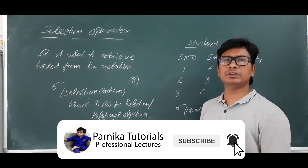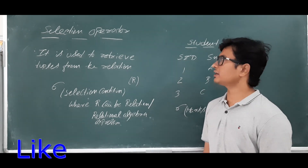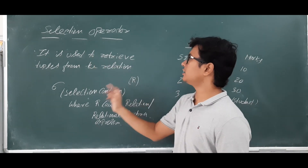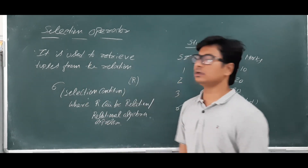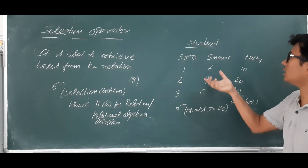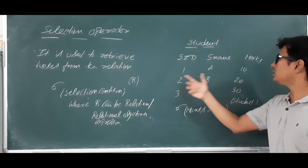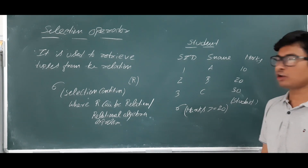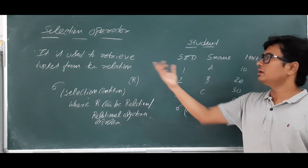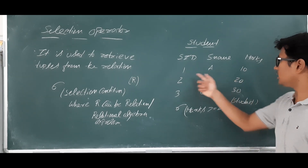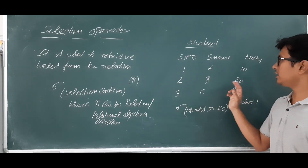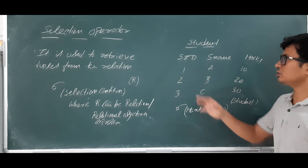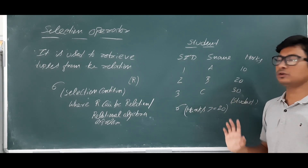Good morning friends. Today we will discuss the selection operator, which is one of the operators in relational algebra. It is used to retrieve tuples from a relation. If you have a relation R or some relation called 'student' and you want to retrieve some or all tuples, we use the selection operator. That is why we call it horizontal splitting, because we are splitting the table horizontally.